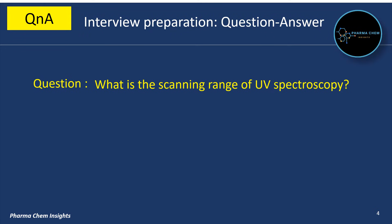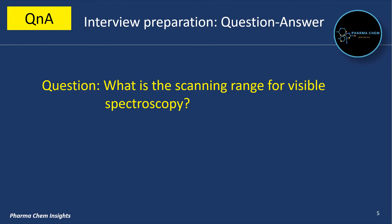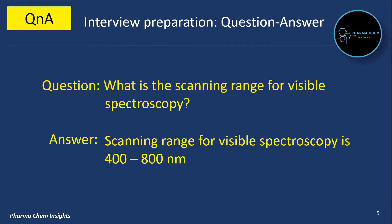What is the scanning range of UV spectroscopy? The scanning range of UV spectroscopy is 200 to 400 nanometers. What is the scanning range for visible spectroscopy? The scanning range for visible spectroscopy is 400 to 800 nanometers.